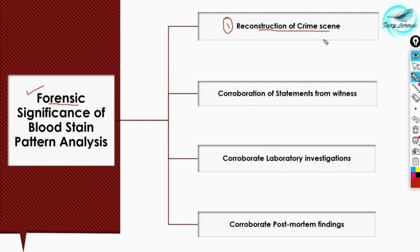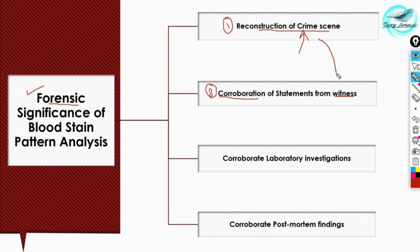If you haven't viewed the previous video, please go and watch it first — you'll understand this video better. Now, the first forensic significance is the reconstruction of crime scenes — mainly reconstructing the sequence of events that occurred. The second is the corroboration of witness statements: bloodstain analysis can provide supporting evidence for statements told by witnesses.